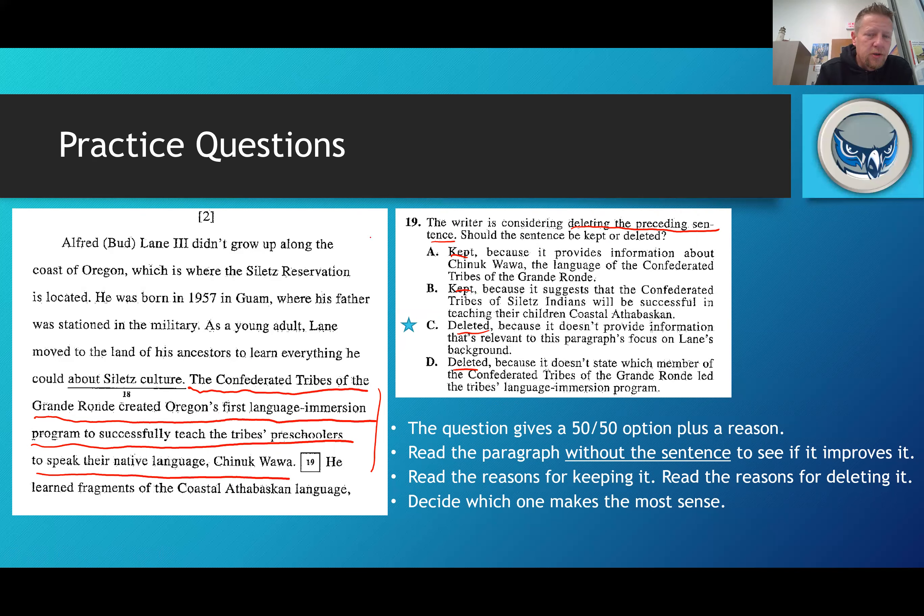Well if I'm looking at the sentences before that, Alfred Bud Lane III didn't grow up along the coast of Oregon which is where the Siletz Reservation is located. He was born in 1957 in Guam where his father was stationed in the military. As a young adult, Lane moved to the land of his ancestors to learn everything he could about the Siletz culture.